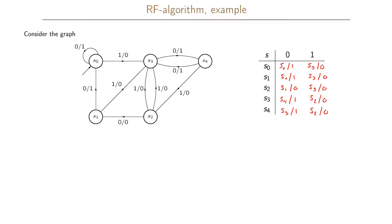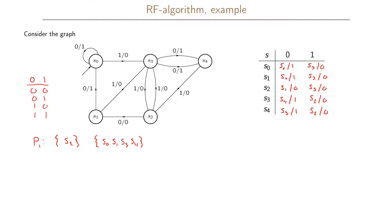To do the RF algorithm we first form the set P1 by grouping states by their output function. There are four possible output combinations for inputs 0 and 1: 00, 01, 10, or 11. Grouping all states with output function 00 gives only state S2, and there are no other states with that output. All remaining states — S0, S1, S3, and S4 — share the output function 10, so they form one block. This concludes step 1.